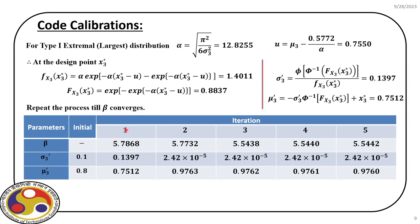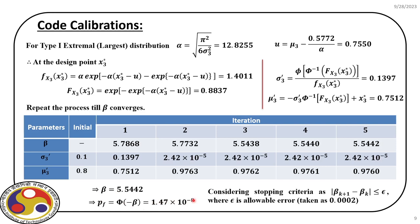After the fifth iteration, beta converges to 5.5442, with a corresponding probability of failure of Φ(−β) = 1.47 × 10⁻⁸. The convergence is based on the stopping criterion of the difference in reliability index between two successive iterations. The table also shows the corresponding values of the equivalent normal distribution for the third random variable.